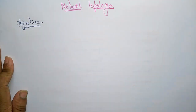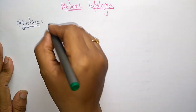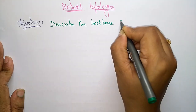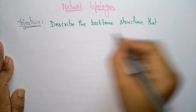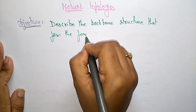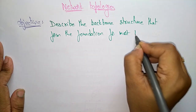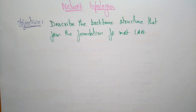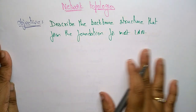What is the main objective of this network topology? It describes the backbone structure that forms the foundation for most local area networks. The topology can be implemented only for local area networks, meaning if systems are present within a room, building, or campus — arranged at 10 meters, 100 meters, or one kilometer distance — then we can arrange those systems in different network topologies: bus, ring, or star topologies.